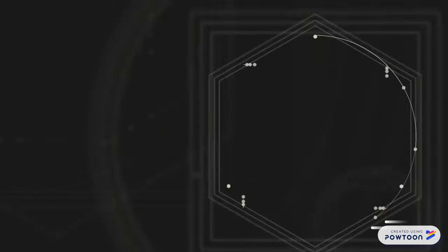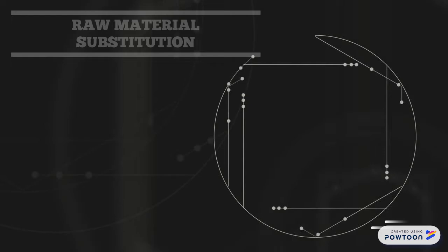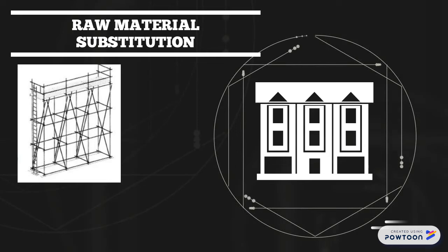Source reduction may be achieved through, for instance, in building a house, the construction team can implement pollution prevention mechanisms by choosing metal or sustainable wooden scaffoldings, particularly bamboo, over traditional wood scaffoldings. Metal, although more expensive, is more durable and can be used several times, while bamboo is easier to grow.